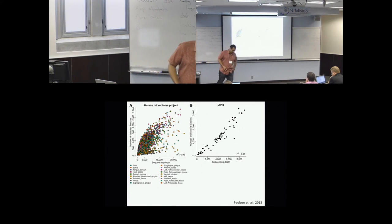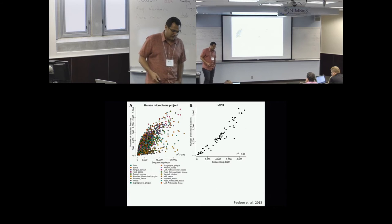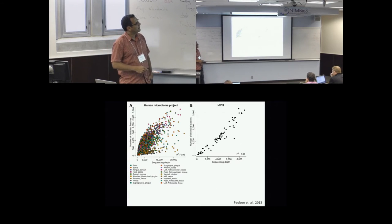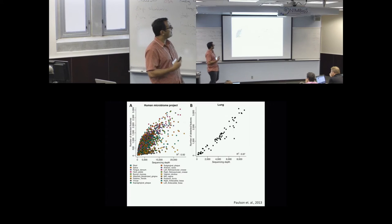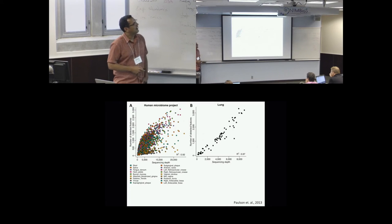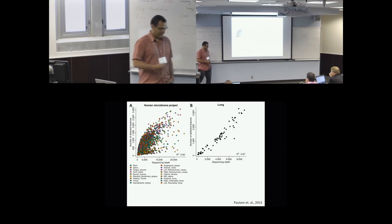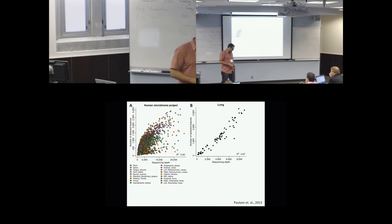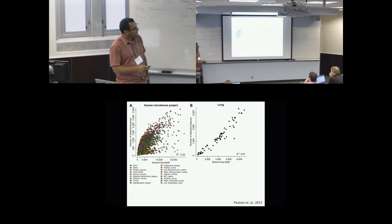So the first plot I made on this dataset was this plot. It's the number of features detected versus the sequencing depth. It's a rarefaction curve, a standard rarefaction curve, but has some pretty significant results when we're trying to do our testing. So this would be another dataset looking at the lung in human subjects. And again, sequencing depth is still a linear.